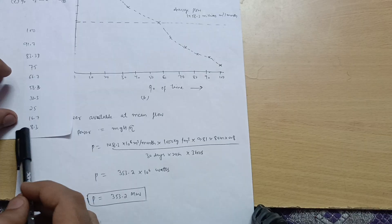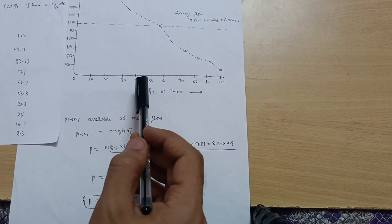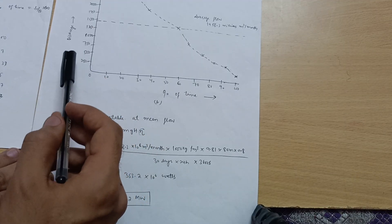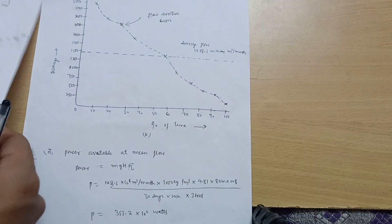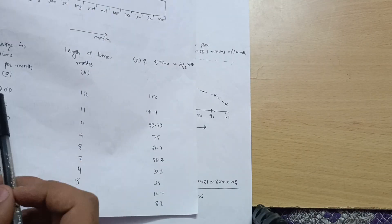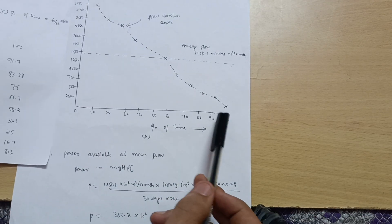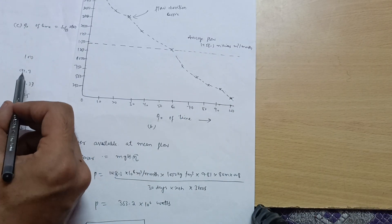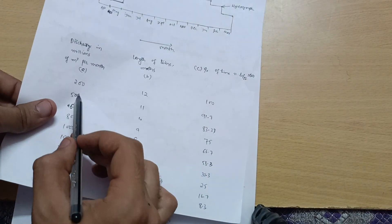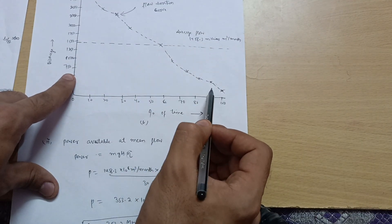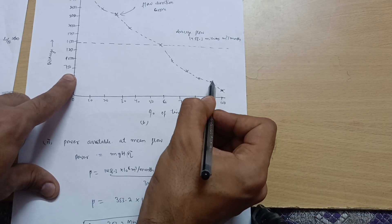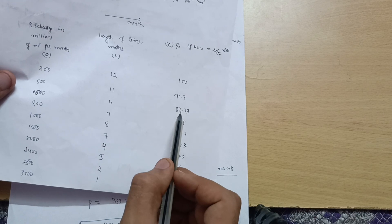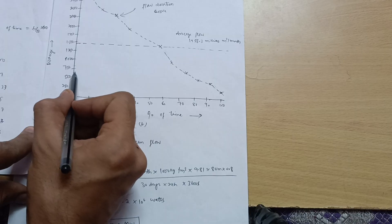On the x-axis, take percentage of time from 10 to 100 in steps of 10. On the y-axis, take discharge in steps of 250. Plot each point: at 100% the discharge is 200; at 91.7% the discharge is 500; at 83.33% the discharge is 600.